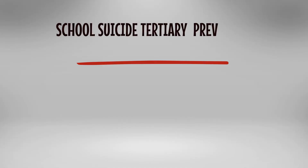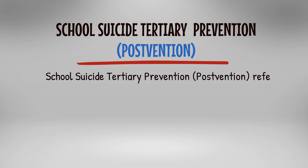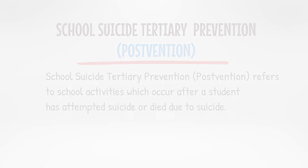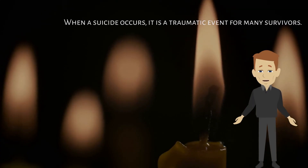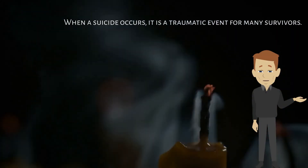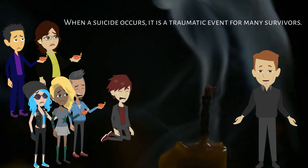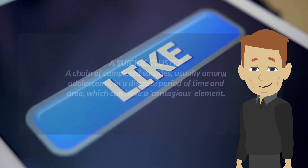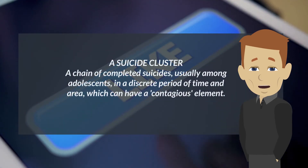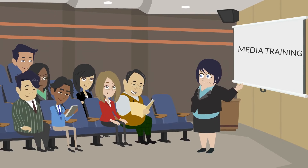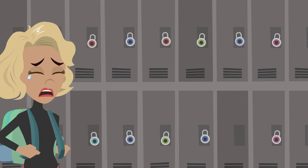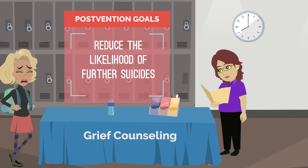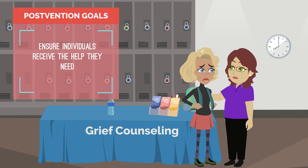School Suicide Tertiary Prevention refers to school activities which occur after a student has attempted suicide or died due to suicide. When a suicide occurs, it is a traumatic event for many survivors. This includes students, faculty, staff, parents, families, and the overall community. Many survivors are at increased risk for suicide themselves. Suicide clusters are well established among adolescents, thus the school response to an actual suicide is crucial. The goals of postvention are to minimize trauma, reduce the likelihood of further suicides, and ensure individuals receive the help they need.